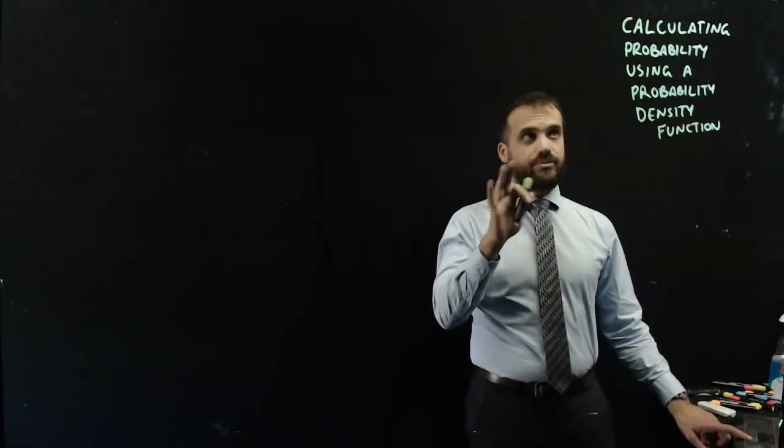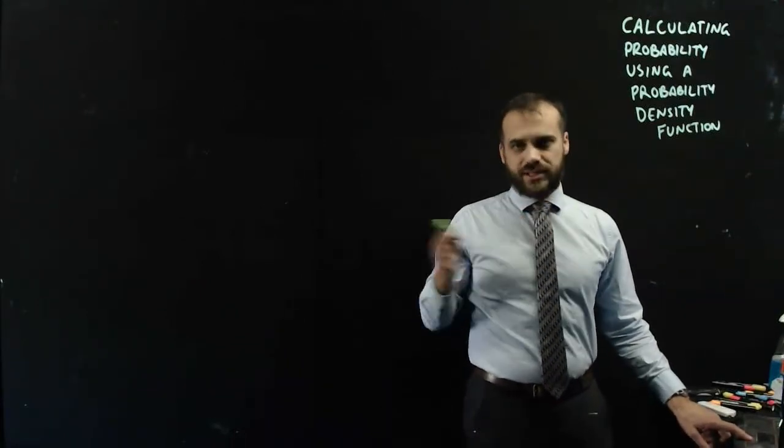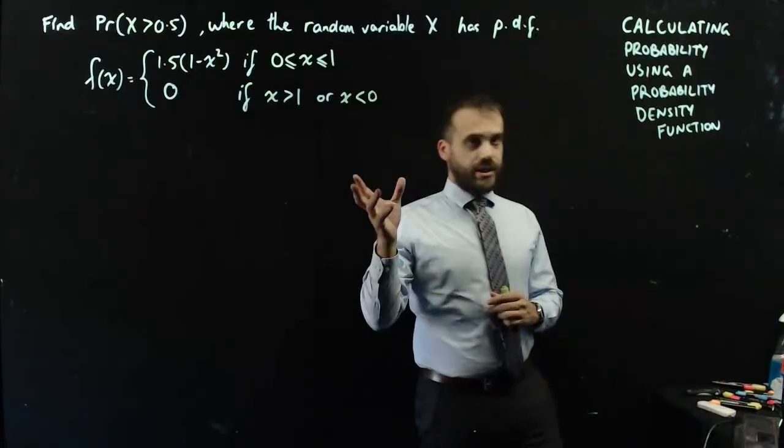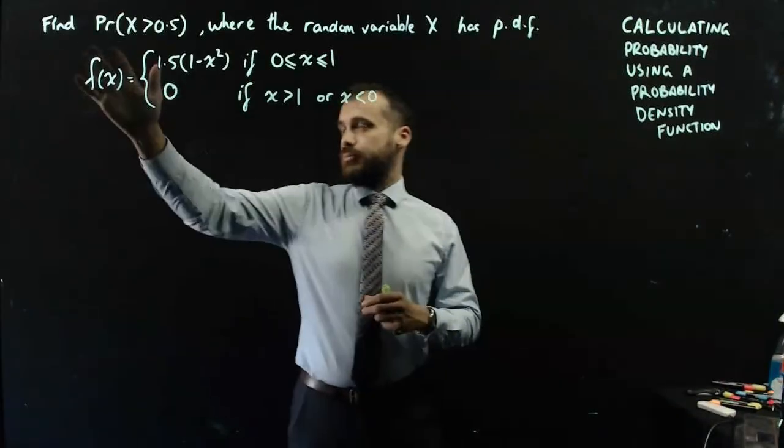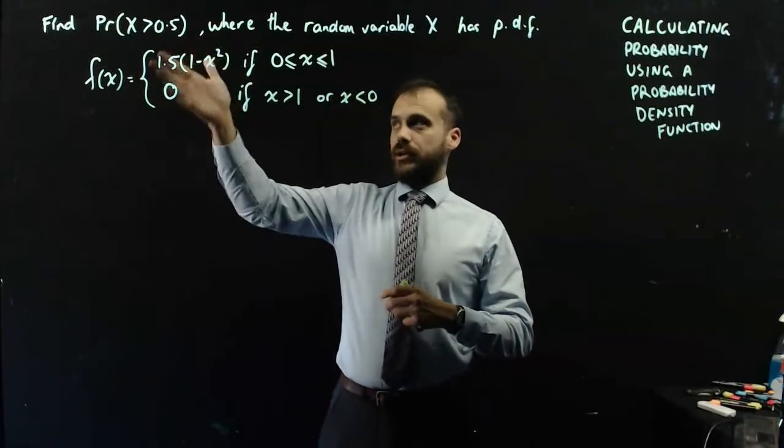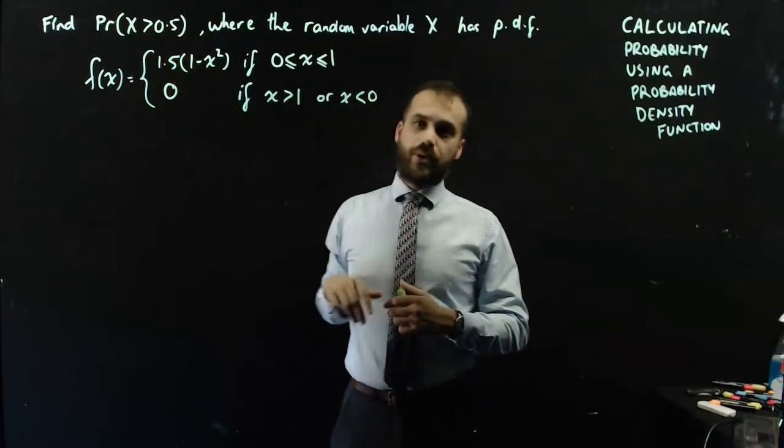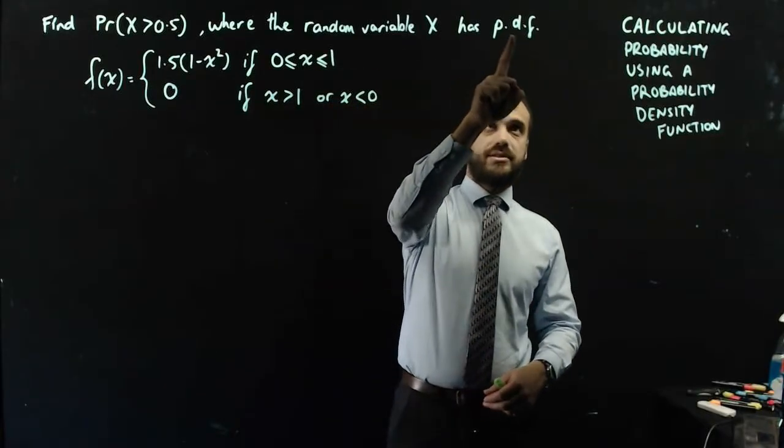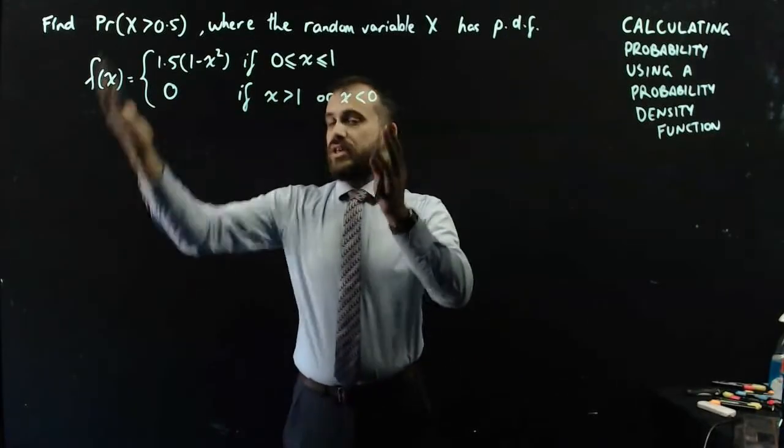In this video, I'm going to be calculating a probability using a probability density function. We're just going to jump straight into an example. Here's my question: Find the probability that the random variable x is greater than 0.5, where the random variable x has a probability density function of this.